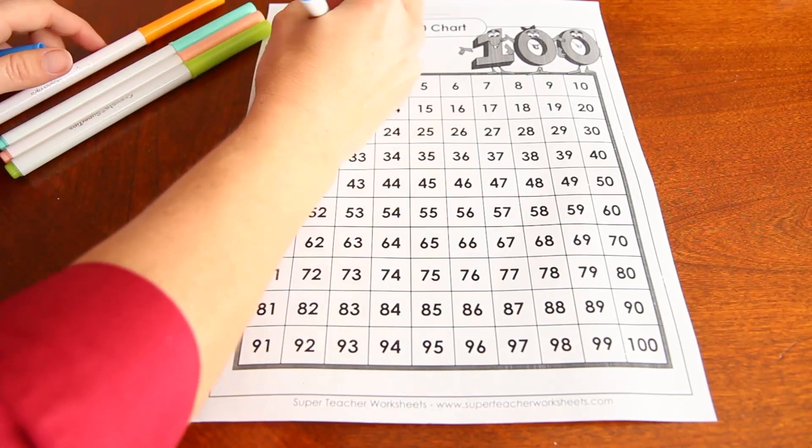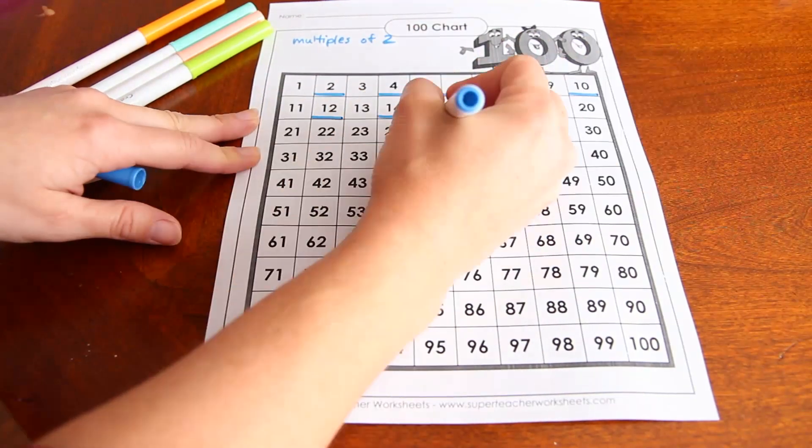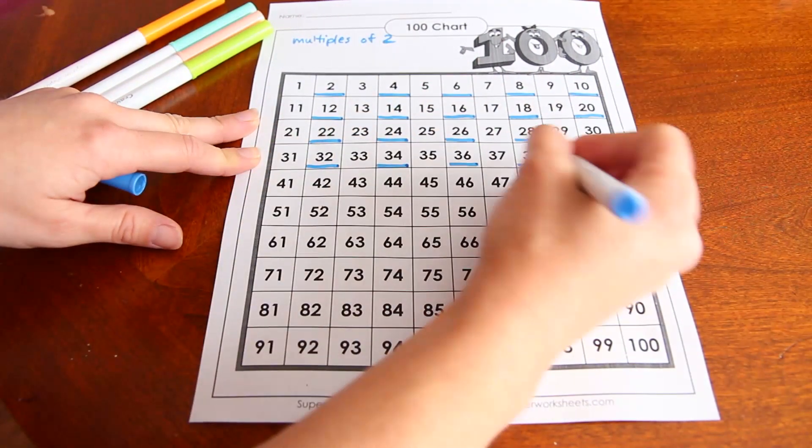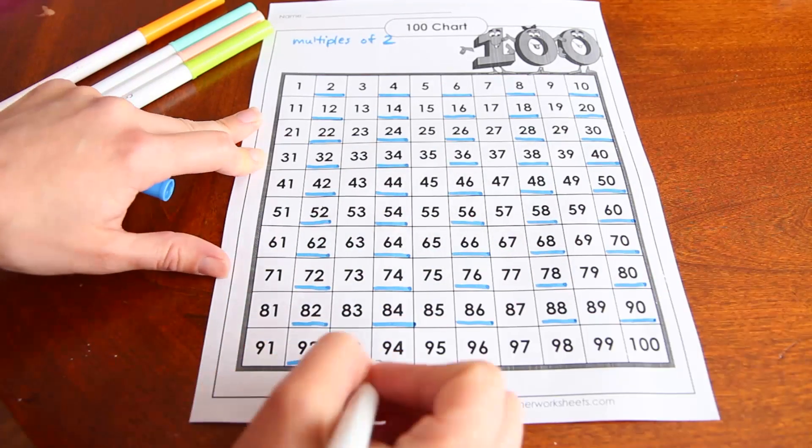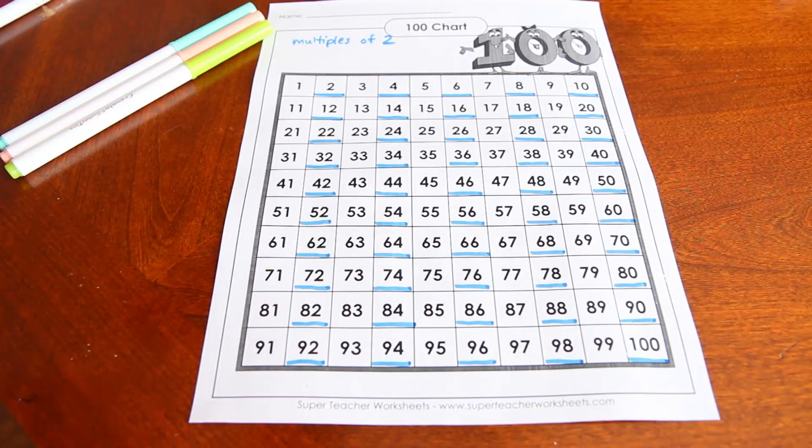And with your child, you might want to say the numbers as you say them. 42, 44, 46. And say each of the numbers. Now we'll do the 4s.